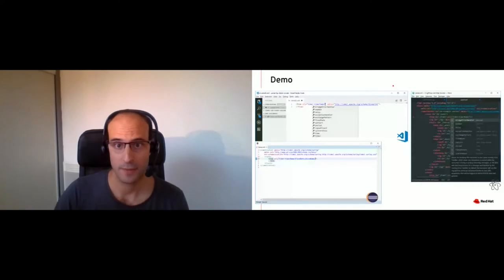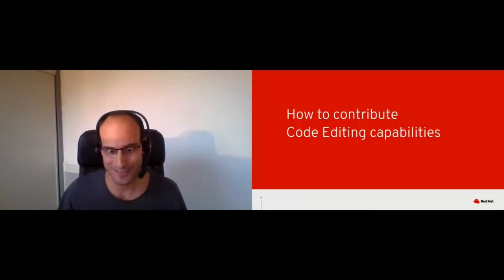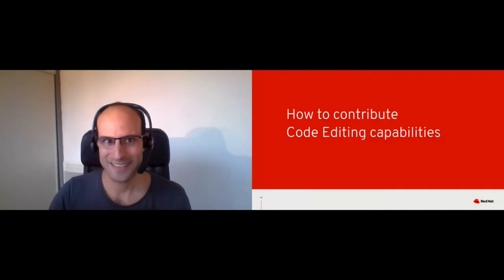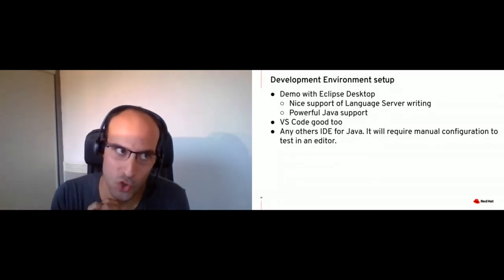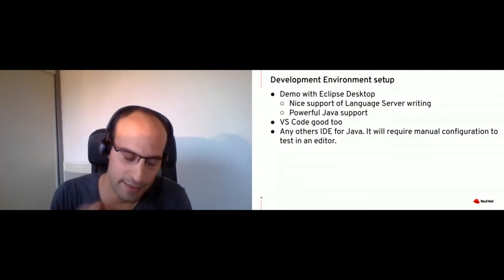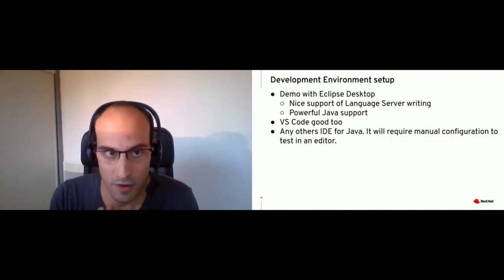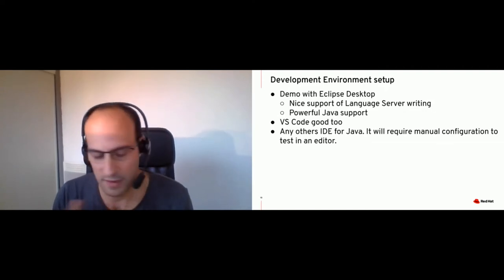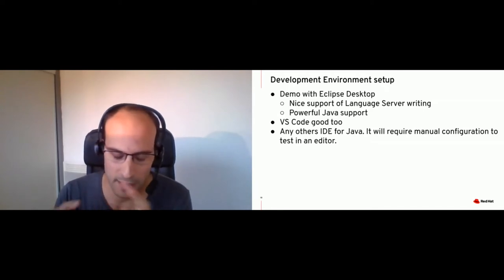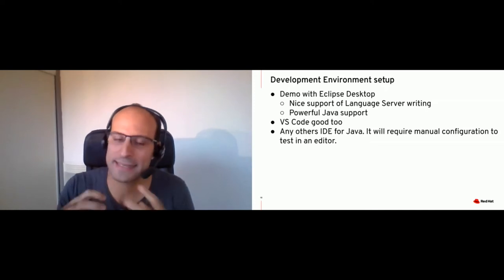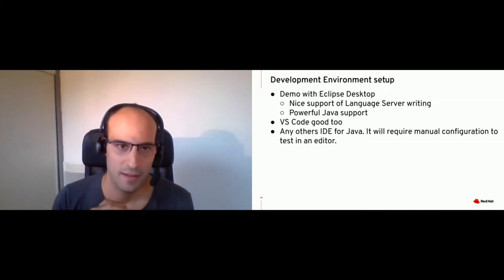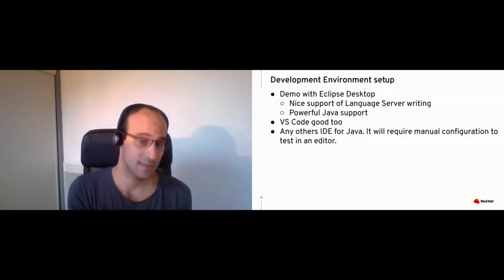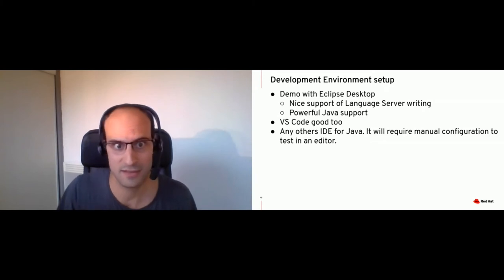Now I will explain how to add more code editing capabilities, because some of them are really awesome but there is still room for improvement. I will show you how to set up the development environment inside Eclipse desktop. Why? Because Eclipse desktop provides very nice support for language server development — you have access to logs, you can edit directly the file, you can test your language server directly inside your workspace, and there is powerful Java support. VS Code is quite good too, but you can really use any IDE that you want as long as it supports Java.